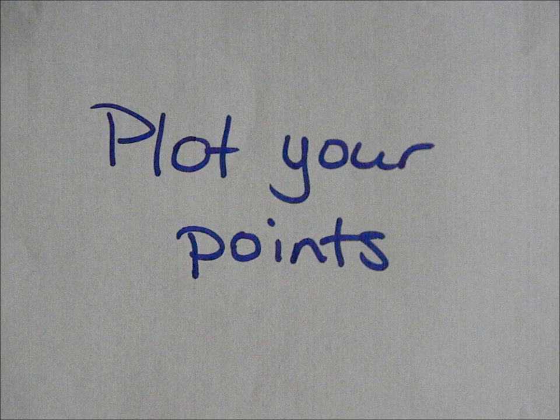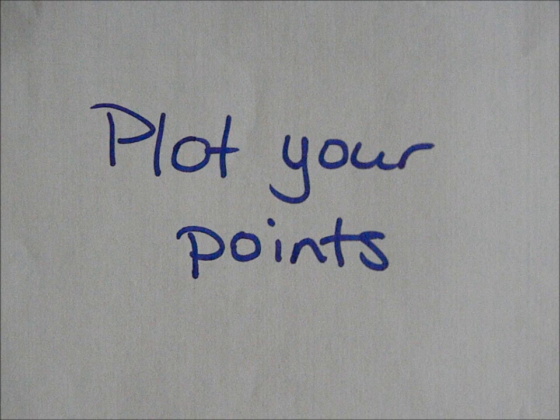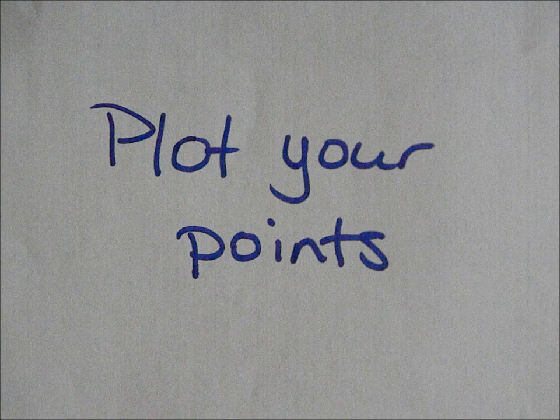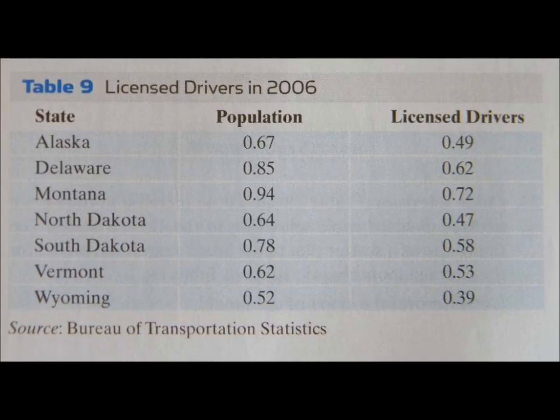The first step in finding the line of best fit is to take your data and plot it on a graph. Here we have licensed drivers in 2006. We're going to use the population on our x-axis and the licensed drivers on our y-axis.